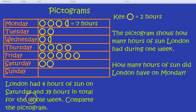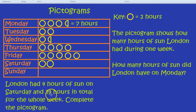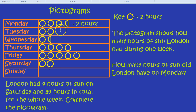But how do we do Sunday? Because they haven't given us Sunday. They haven't, but they've said there's 39 hours in total for the whole week. So what we need to do is add up all the hours so far and see what's left over for Sunday.